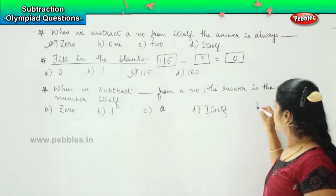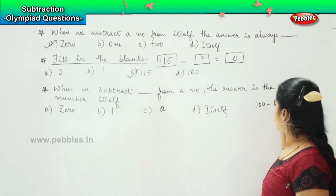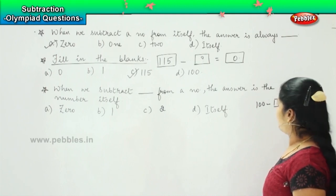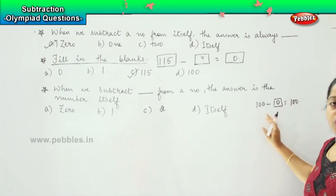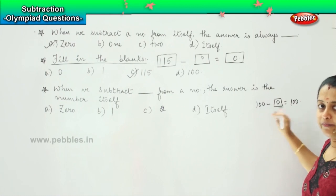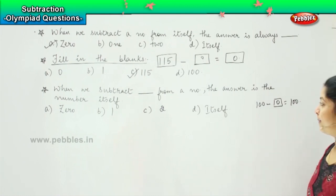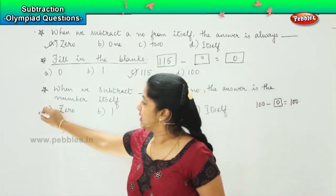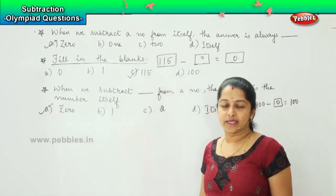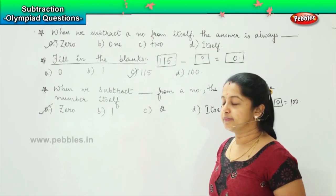For example, if I reduce 100 minus something, the answer will be 100. So what should be the answer here? Very good. It should be 0. Only if I reduce 0 from the given number, my answer will remain the number itself. So what is the right answer? Yes. It's option a) 0. Clear? Shall we move ahead? Okay.